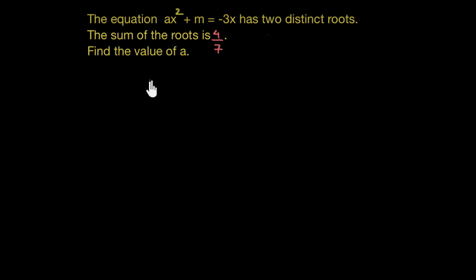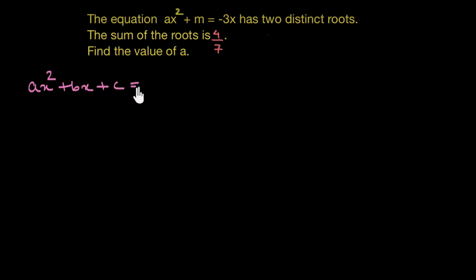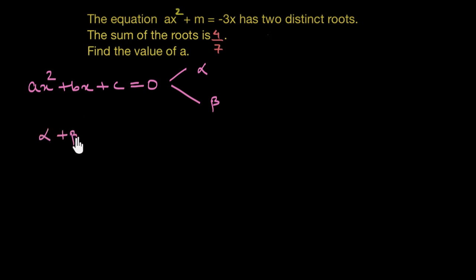As we have seen in our earlier videos of this unit, for a standard quadratic equation ax squared plus bx plus c equal to 0, let's say if the roots are alpha and beta. For the standard quadratic equation, the sum of the roots — that is alpha plus beta — would be given as negative of coefficient of x, that is negative of b, divided by coefficient of x squared, which is a.